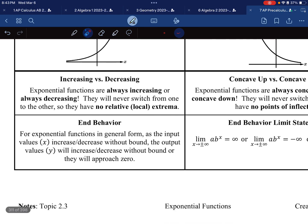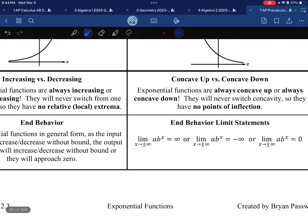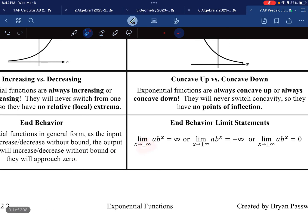End behavior. There's either going to be two possibilities. It will increase or decrease without bound, or it will approach 0. That means that when I go left or when I go right, I will either have infinity, negative infinity, or 0. There are only three choices with end behavior.